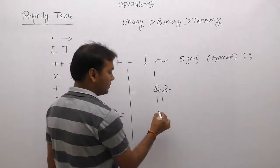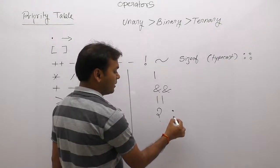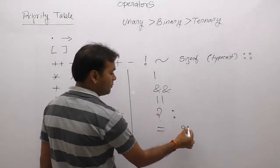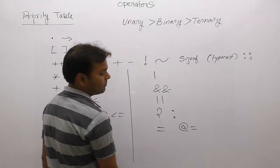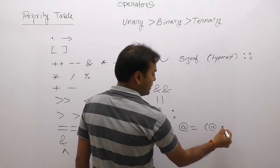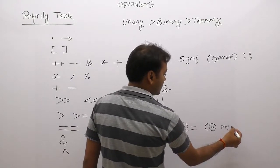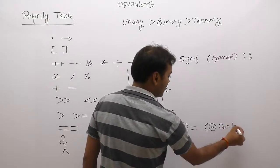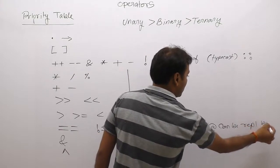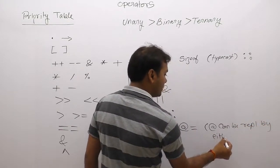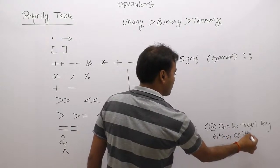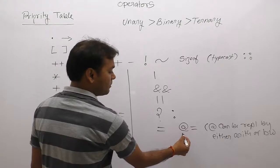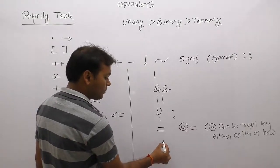After logical, next is the conditional operator — its priority is higher than assignment. Then assignment and compound assignment operators. The compound assignment operator (@) can be replaced by either an arithmetic operator or a bitwise operator. Finally, the least priority operator in C is the comma operator.